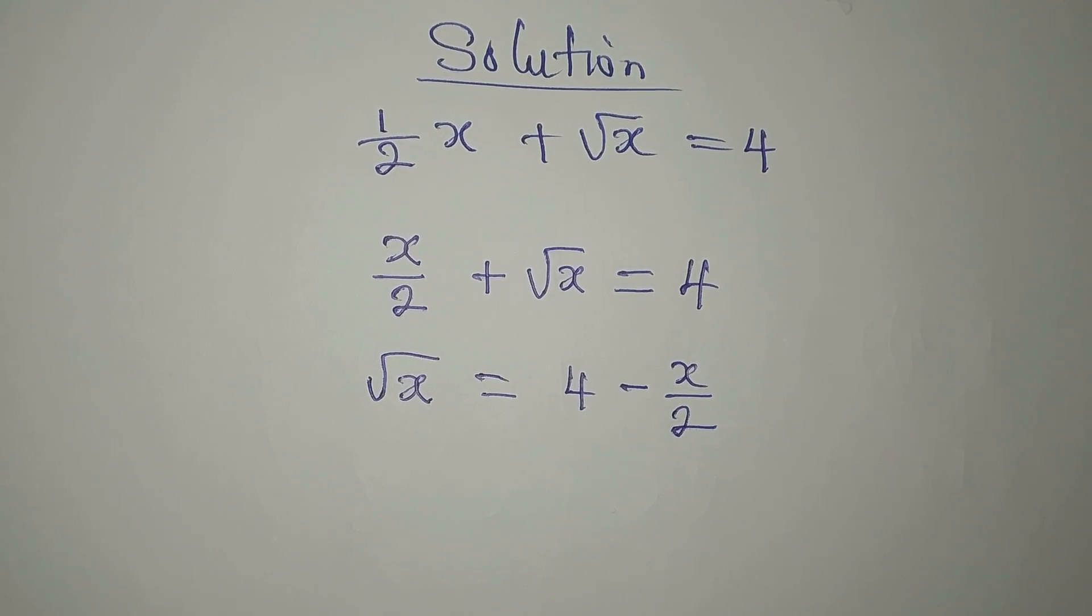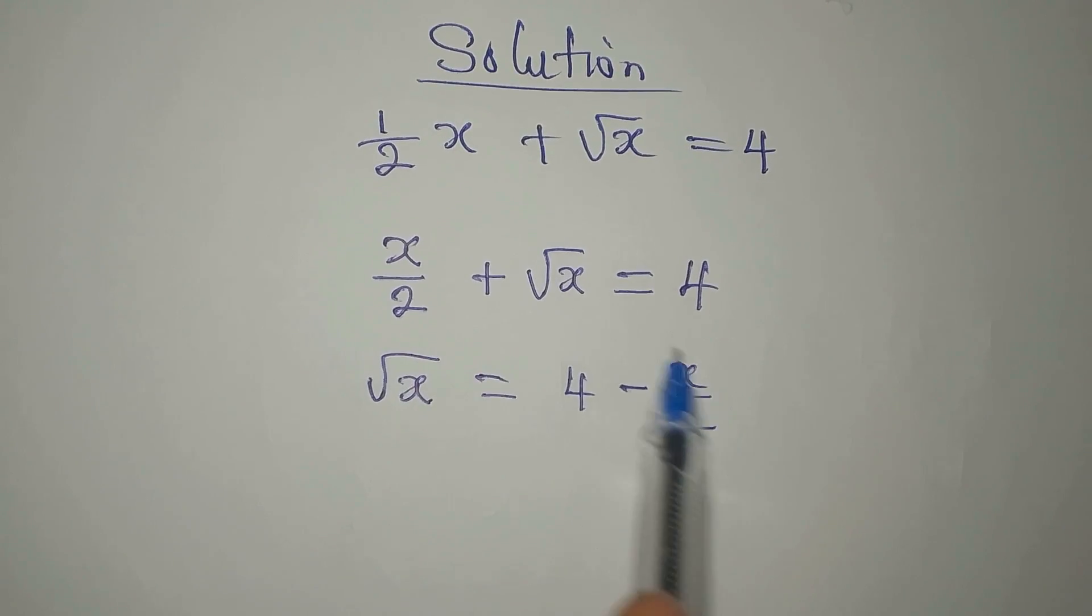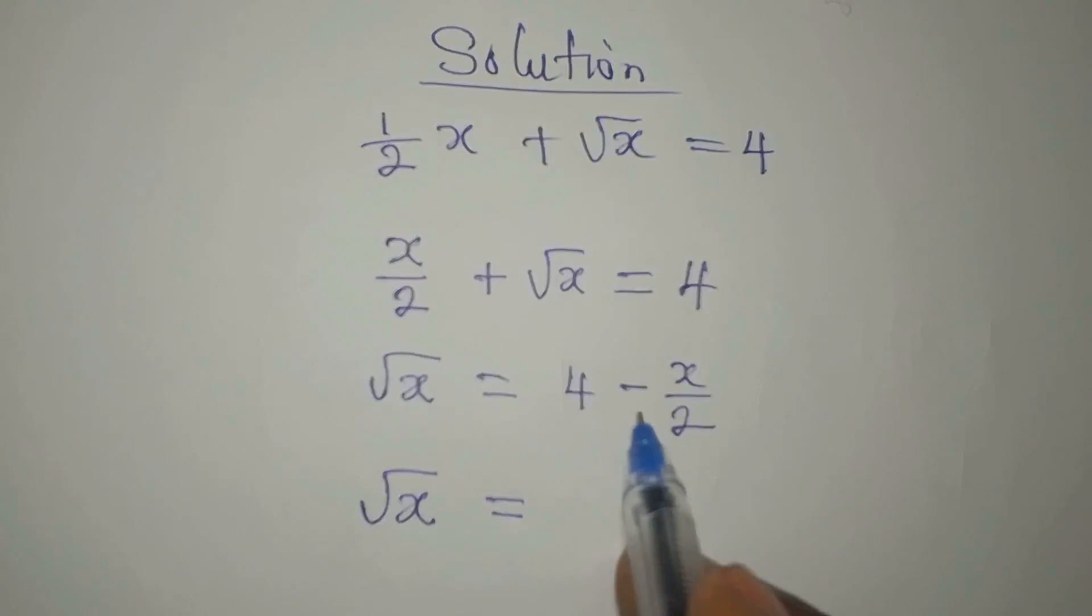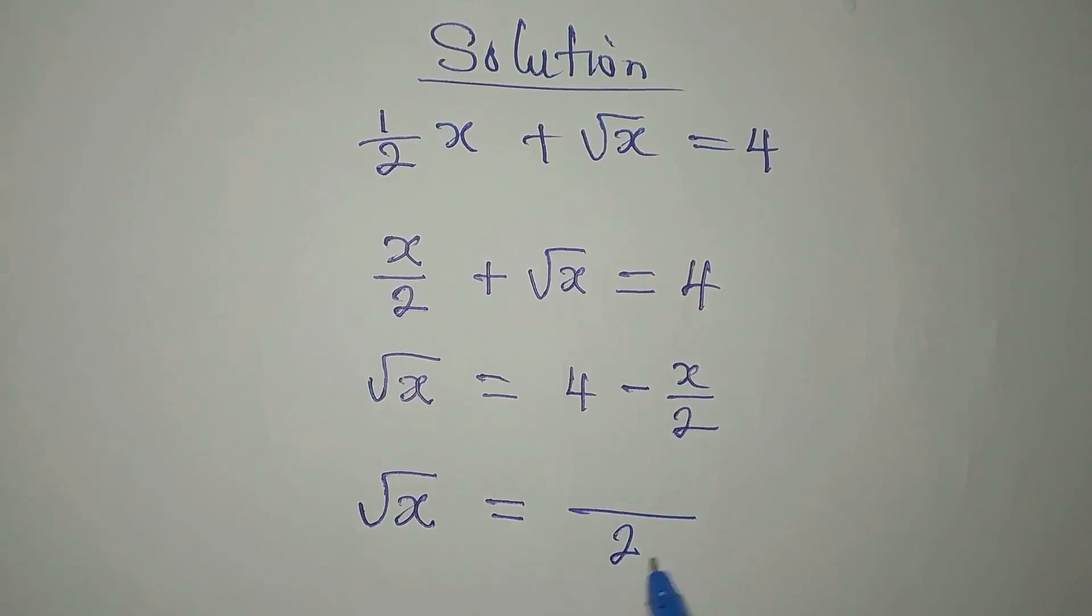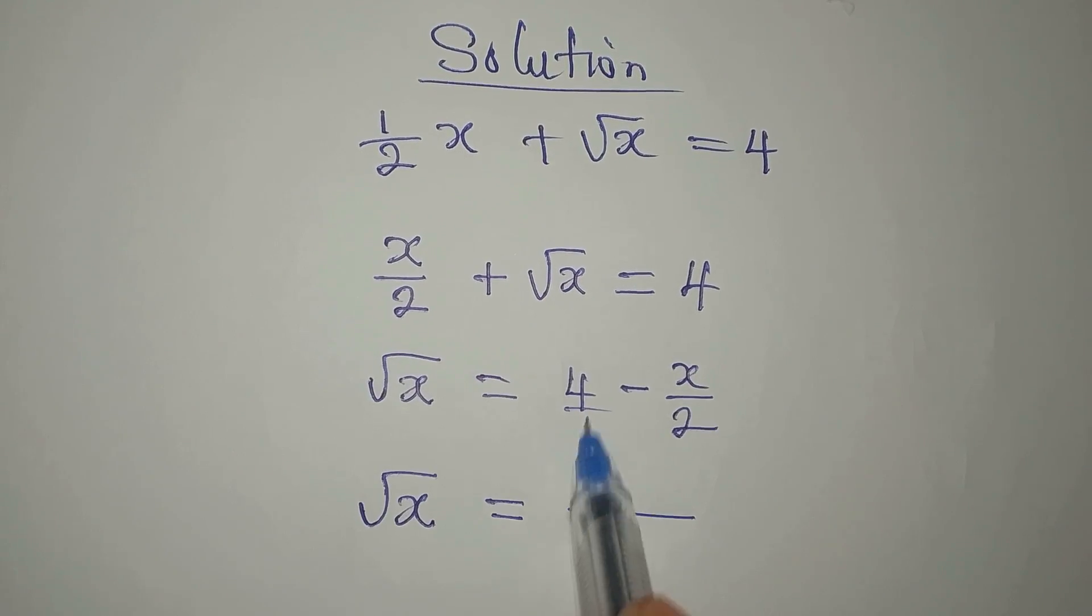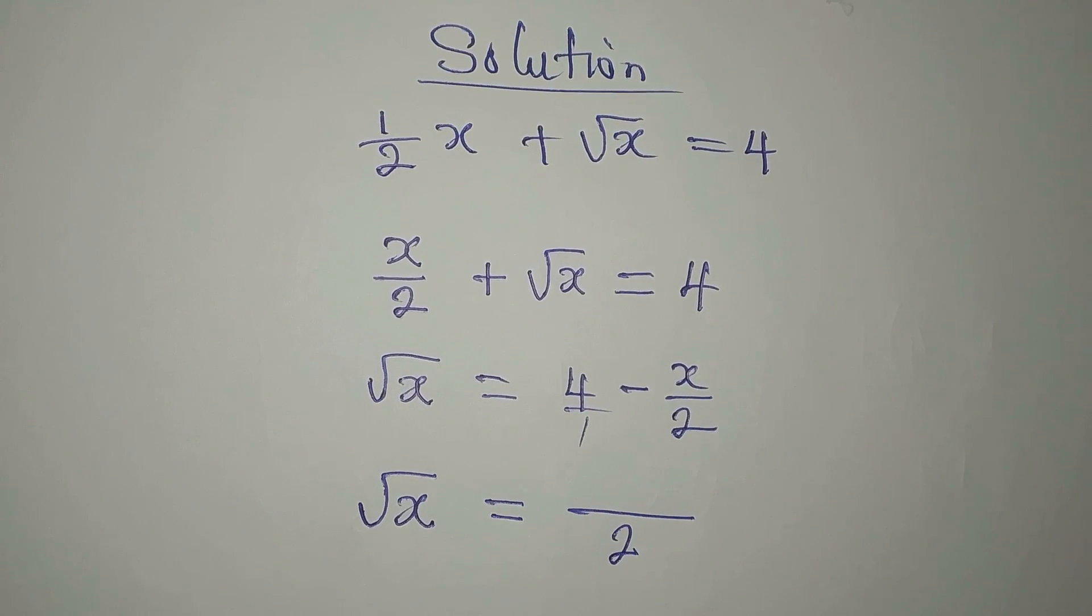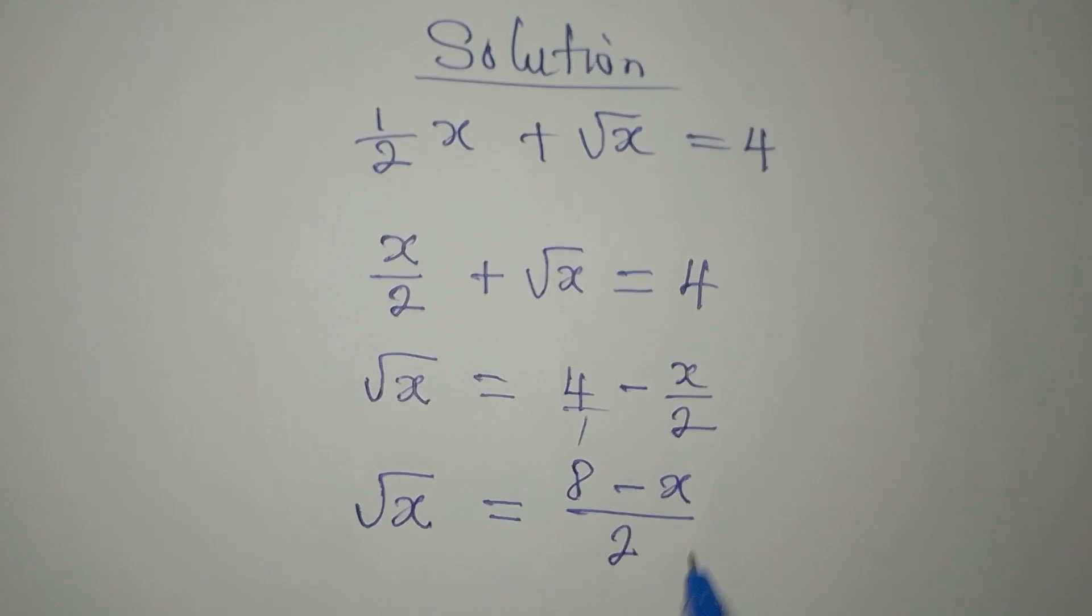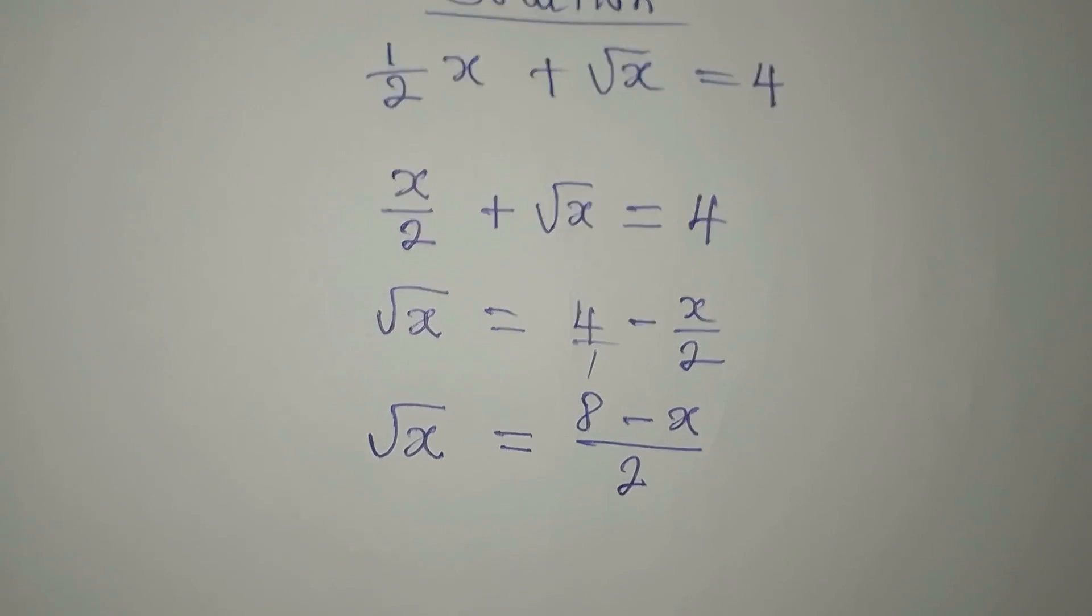Now see what I want to do. I want to combine this into one fraction. So we have square root of x equals the LCM of this is 2. Then 2 divided by 1 is 2 times 4 is 8, then minus 2 divided by 2 is 1 times x is x. So now we have one fraction there.